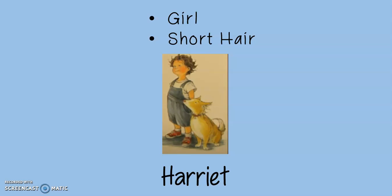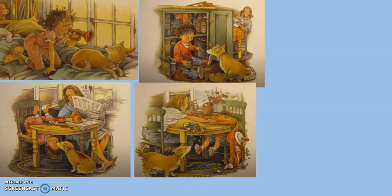So before we read the story, just looking at the cover, I can already see Harriet's a girl. Harriet has short hair. We know she has a dog. She looks like she's a little girl. But let's look at some of the illustrations and see what else we can learn about the character.